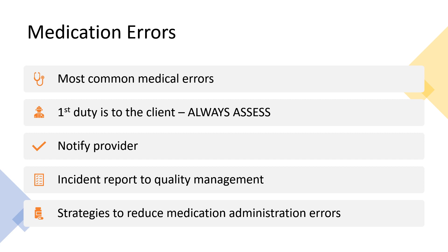Medication errors result in more than 7,000 deaths each year in the United States alone. The highest risk of committing a medication error occurs whenever the nurse administers the medication. When an error has occurred, the client must be assessed immediately for any change in their medical condition, and the nurse must notify the healthcare provider immediately to remedy any potentially harmful effects.